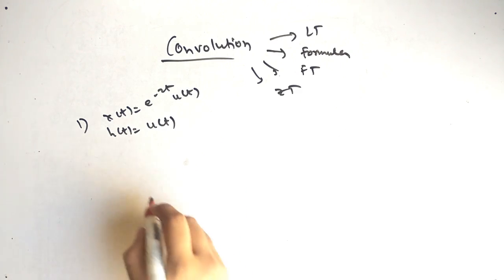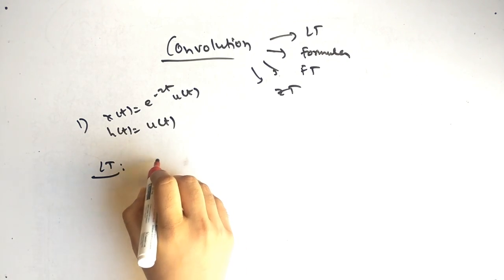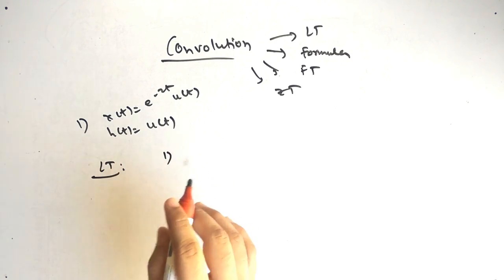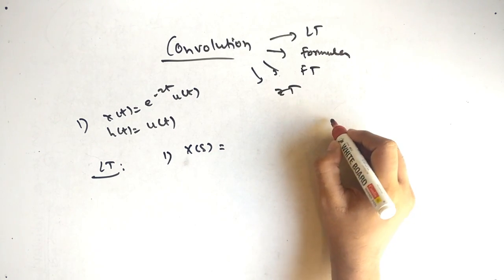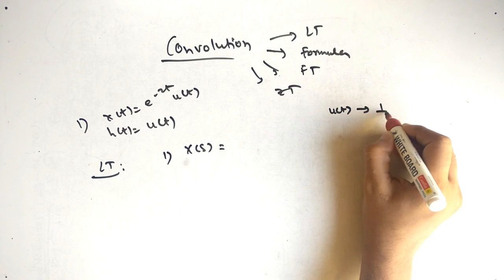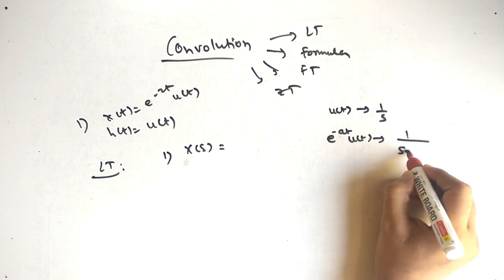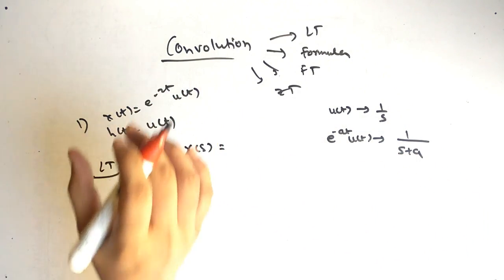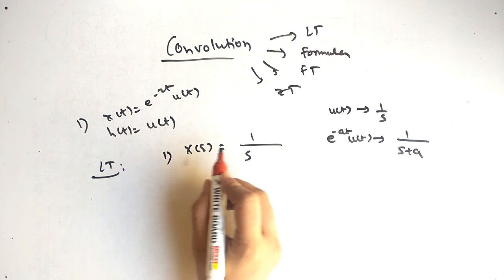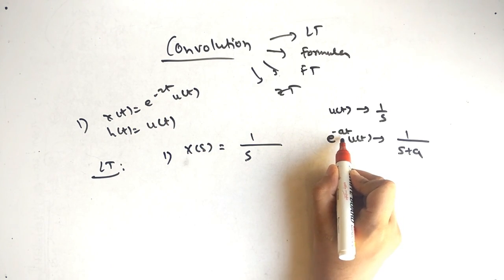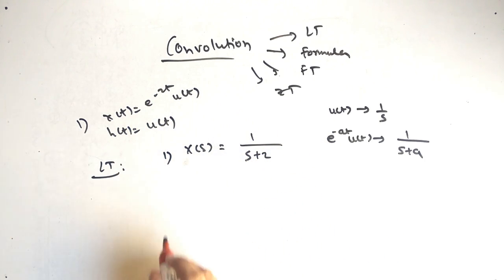Let's solve this by Laplace transform. Laplace transform means we convert this into s. The first step is to convert x of t into X of s. The formula is: u of t converts to 1 by s, and when we multiply e raised to minus at to u of t we get 1 by s plus a. Applying this formula, since a is 2, we get X of s equal to 1 by s plus 2.